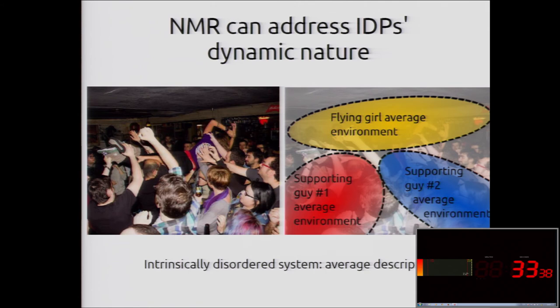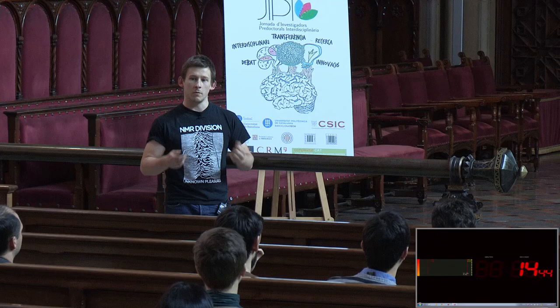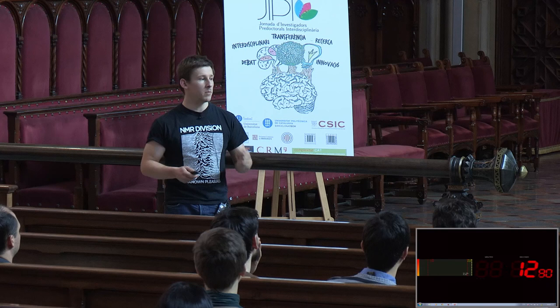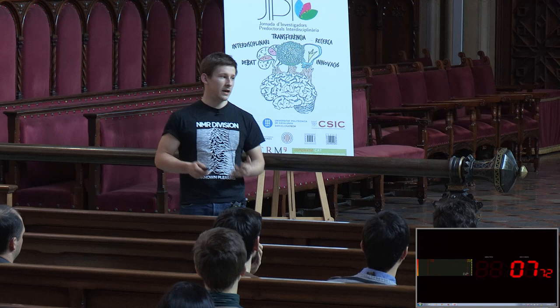Coming back to proteins, what nuclear magnetic resonance provides us — in contrast to other techniques — is average information about the chemical environment of the atomic nuclei that form the protein and their dynamics. With these data, we can construct models that give us an insight into how intrinsically disordered proteins work. Thank you very much for your attention.